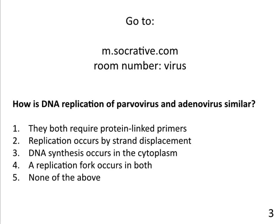Quiz question: how is DNA replication of parvovirus and adenovirus similar? The answer is number two — replication occurs by strand displacement in both. Only adenovirus requires a protein-linked primer (parvovirus uses a DNA hairpin). Both are in the nucleus, not the cytoplasm. A replication fork does not occur in either — they both use strand displacement.